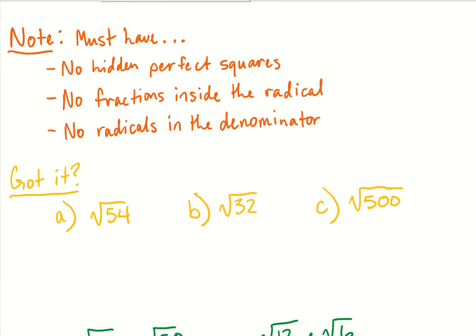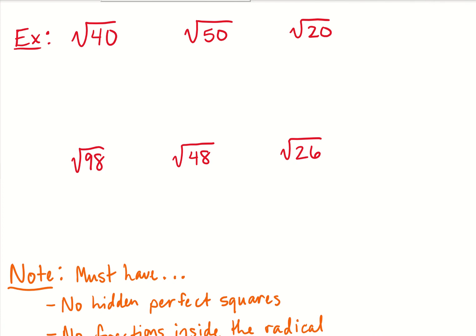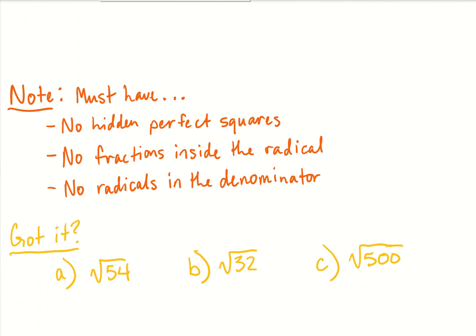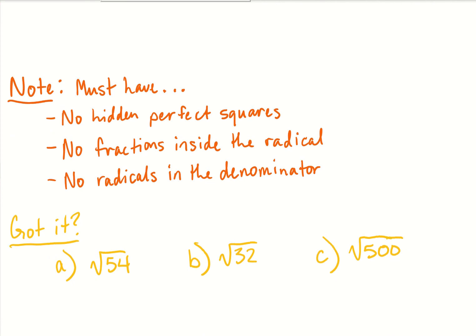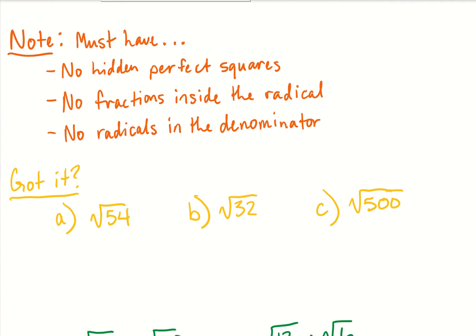Just a couple of notes: in order for our radicals to be simplified, we must have three things. Number one, we can't have any hidden perfect squares — like in the square root of 40, four was the hidden perfect square still inside. Number two, we can't have any fractions inside the radical. And number three, we can't have any radicals in the denominator. Those are the three things we've got to have in order to be completely simplified. Go ahead and do these three got-it problems on your own, pause the video, then we'll continue with the notes after that.